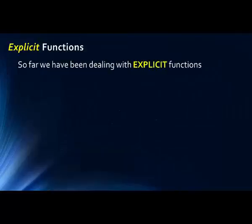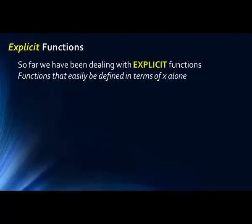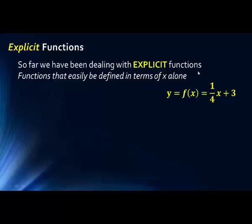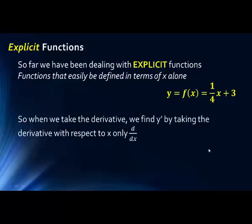So far we've been dealing with explicit functions. This means simply that the function can be easily defined in terms of x alone — y is on one side of the equation, and everything else only has x's in it. So we get the value of y by doing some calculation with x. When we take the derivative, we find y prime by taking the derivative with respect to x only. For example, the derivative of y equals 1.4x plus 3 is simply the coefficient in front of the x, or 1.4.